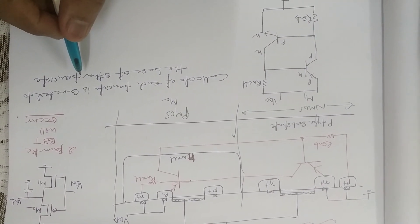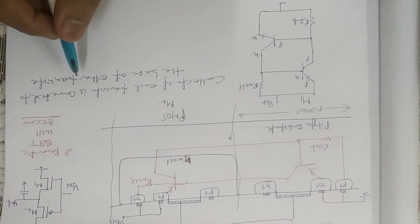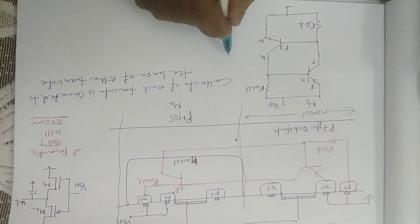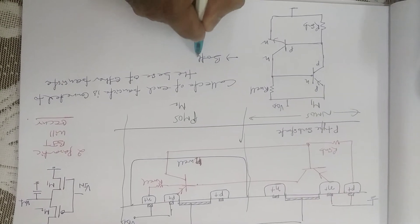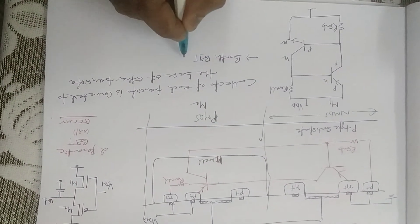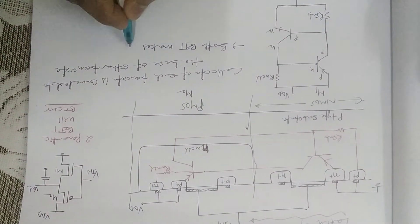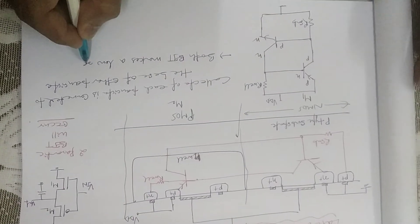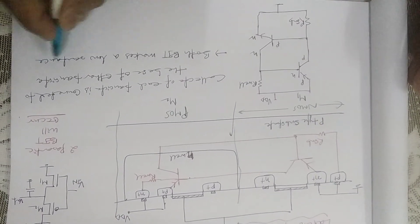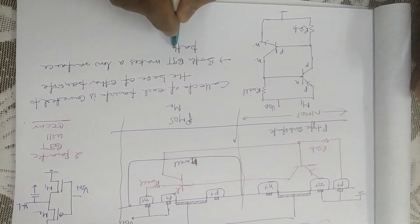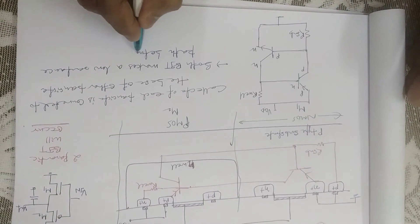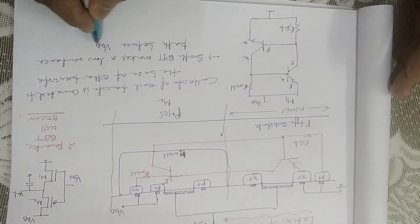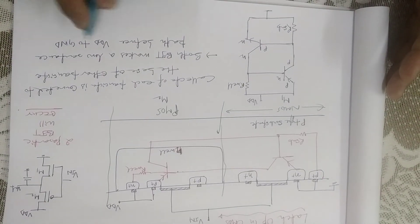Both BJTs make a low resistance path between VDD to ground.